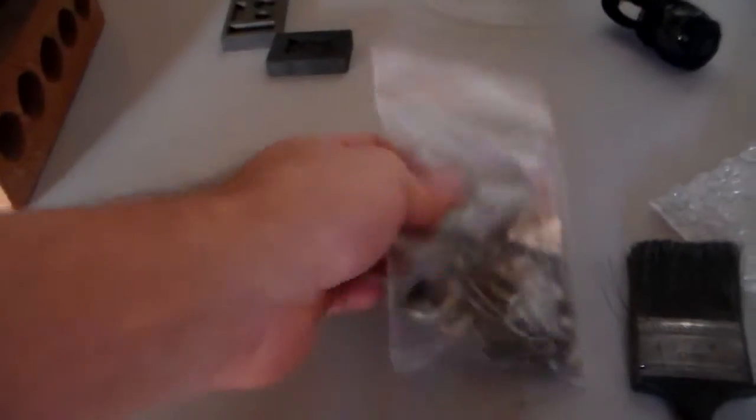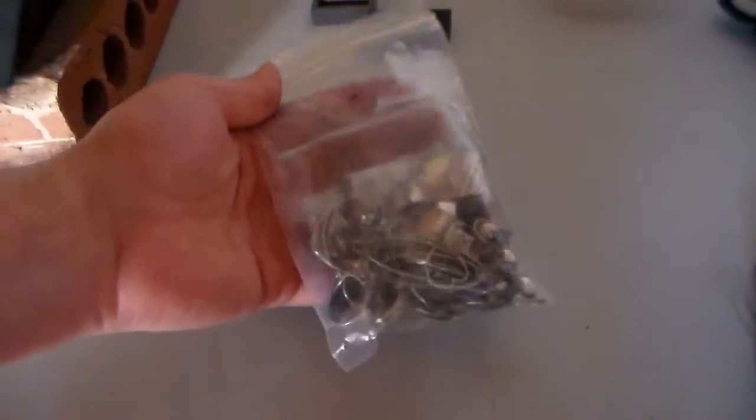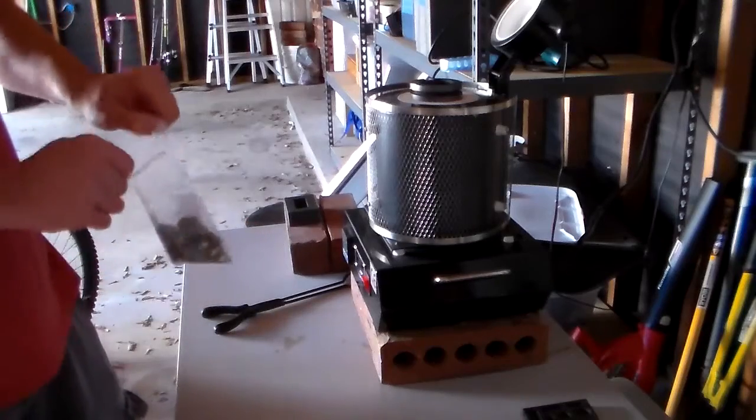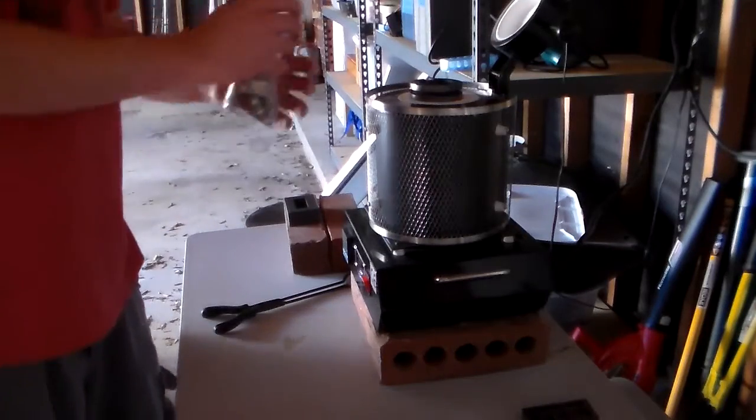And I've got my five ounces of scrap silver here. And the first step is going to be to put it in the crucible.